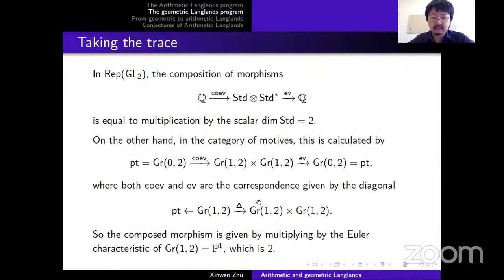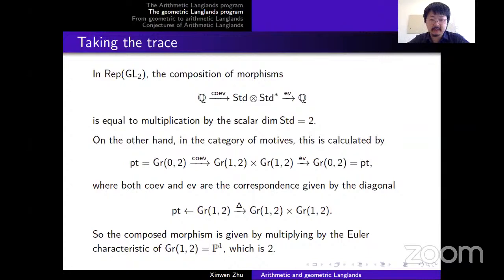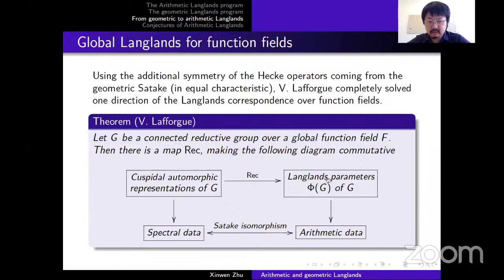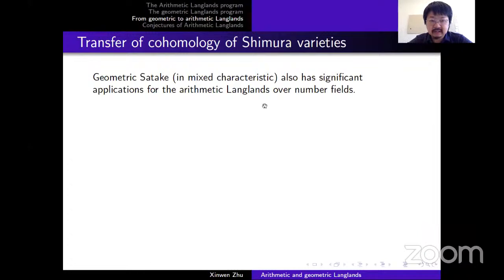Using these kinds of ideas, Vincent Lafforgue completely solved one direction of the global Langlands correspondence over global function fields — the fields in the middle column of Weil's rosetta stone. As mentioned before, originally one hoped for a bijection, but Lafforgue proved one direction. Of course we also want to apply such ideas to the left column, which has to do with arithmetic, and it does have applications to arithmetic Langlands over number fields.